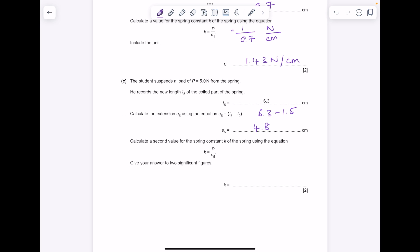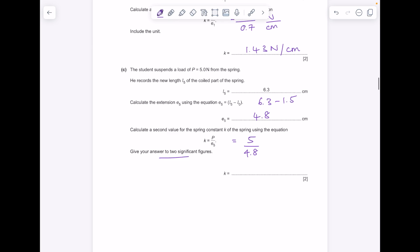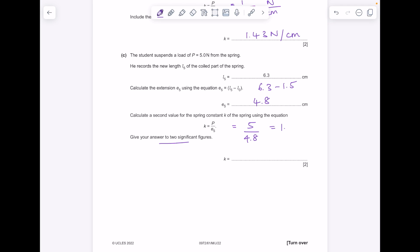Calculate a second value for the spring constant using this equation. So our new load is 5 newtons, E5 is 4.8. Give your answer to two significant figures, so that equals 1.04 which is 1.0.